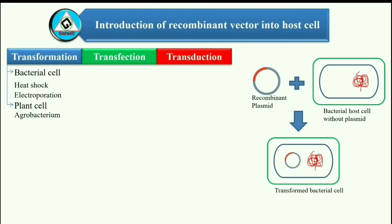Another method used to transform plant cells is biolistics, where particles of gold or tungsten are coated with DNA and then shot into young plant cells or plant embryos. Some genetic material enters the cells and transforms them. Plant cells can also be transformed using electroporation, which uses an electric shock to make the cell membrane permeable to plasmid DNA. Due to the damage caused to the cells and DNA, the transformation efficiency of biolistics and electroporation is lower than agrobacterial transformation.